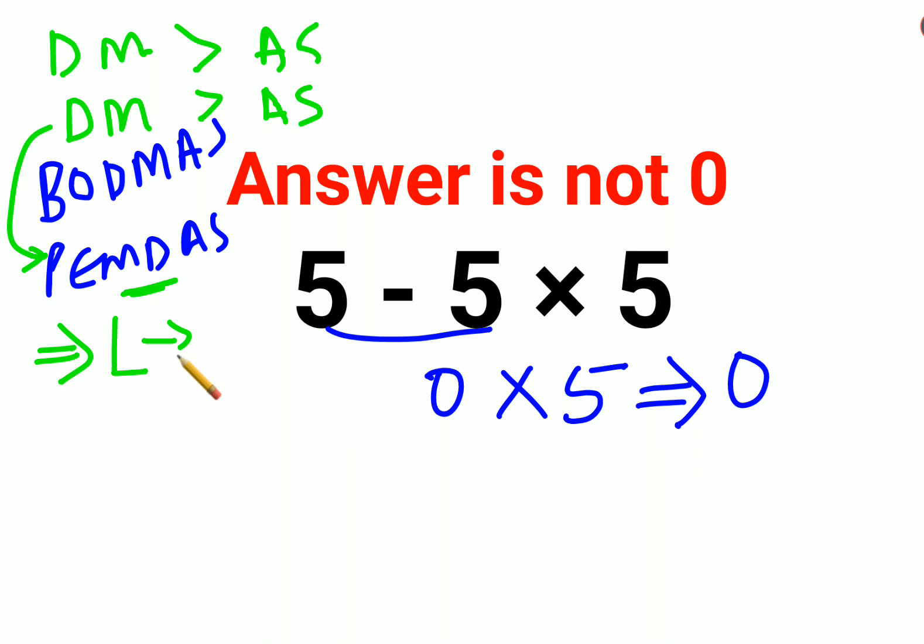So in that case you will always go from left to right. If your question had just 5 divided by 5 into 5, in that case what you would have done? You would have done division first and then multiplication, not by following BODMAS. Please understand you are just going and following this left to right rule.